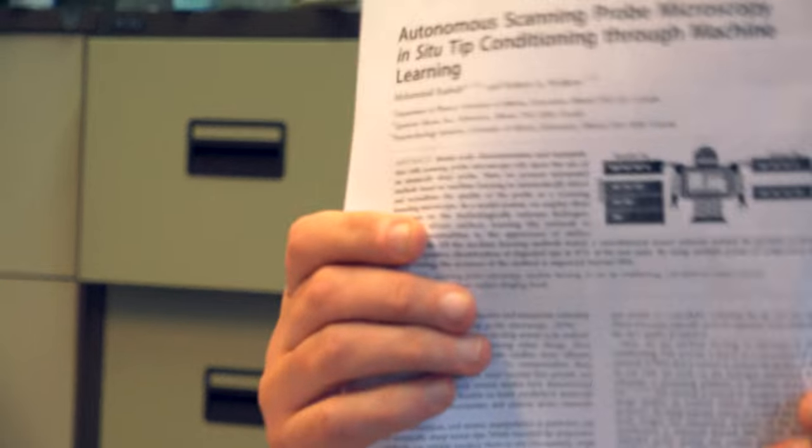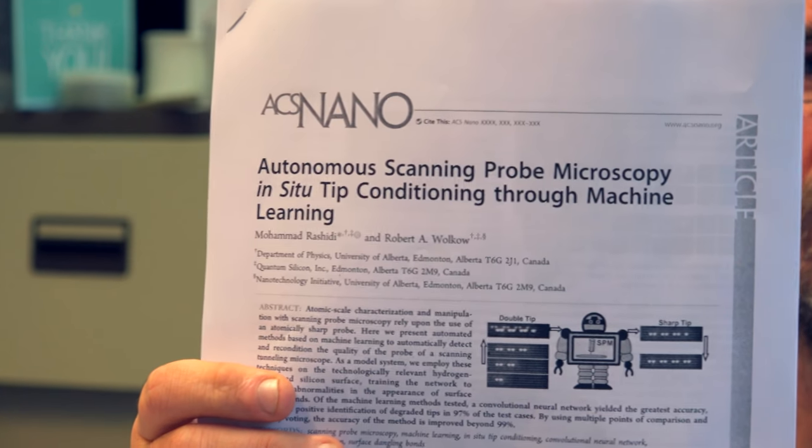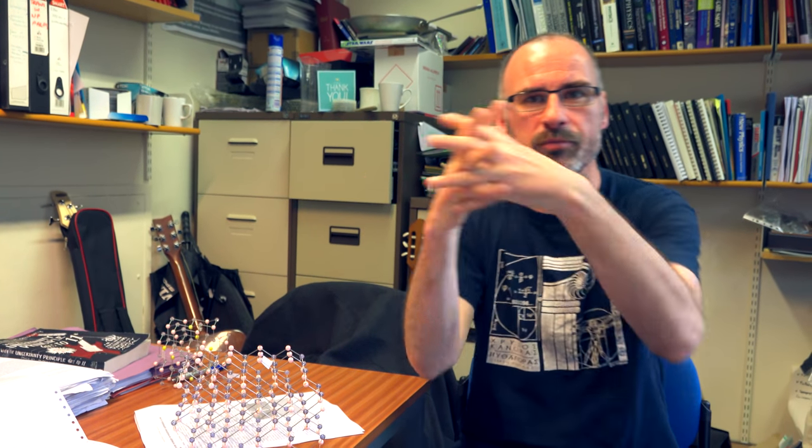So as you can see, it says Autonomous Scanning Probe Microscopy In-Situ Tip Conditioning Through Machine Learning. And this is from Bob Walcol's group in the University of Alberta. And it's a phenomenal piece of work. I think it might be of interest to a Computerphile audience. They're basically controlling the atomic structure of matter through machine learning. So it's really the interface between physics and computer science.